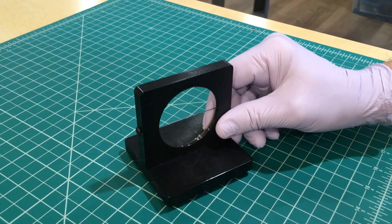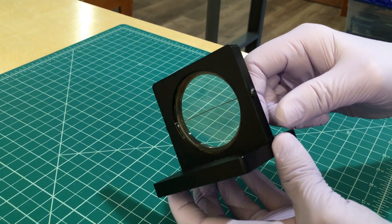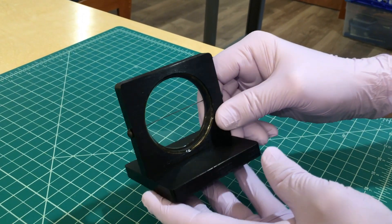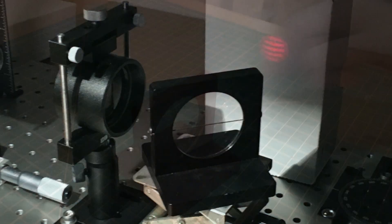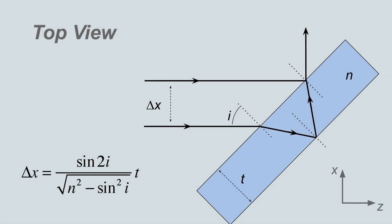A shear plate interferometer is a simple optical component consisting of a slightly wedged plate of glass with highly polished, uncoated, optically flat surfaces. Reflections of the front and back surfaces interfere to make fringes. Because of the finite thickness of the plate, the front and rear reflections are displaced, or sheared, with respect to one another, thus the name shear plate interferometer.